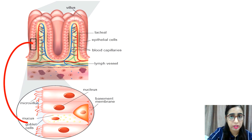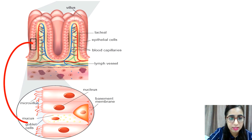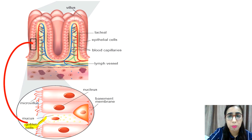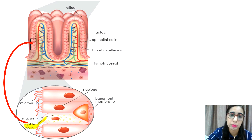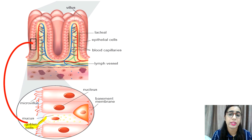There are also goblet cells on the epithelial cell lining of the small intestine. The goblet cell is an epithelial cell but without microvilli, as you can see in the picture. Goblet cells secrete mucus to smoothen movement and protect the wall of the small intestine from the contents of the lumen. Lastly, intestinal glands secrete intestinal juices containing digestive enzymes. Try to draw the structure of the villus in your notes for a clearer understanding.